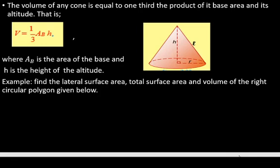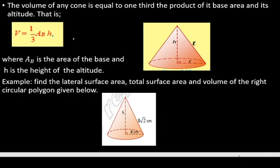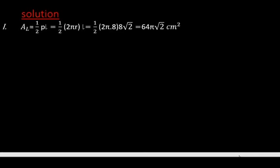We have a right circular cone here. Its base radius is 8 centimeters and its slant height is 8√2 centimeters. We don't have the altitude, but we will find it ourselves using the right angle triangle in the given cone. The Pythagorean theorem will give us a hint to find the height of the altitude, which is very important for finding the volume.